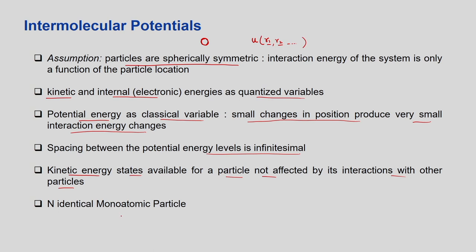We also assume that the kinetic energy states available for a particle are not affected by its interaction with other particles. Whatever energy states a particular atom has access to is not dependent on other atoms. That is why we consider N identical monoatomic particles — with polyatomic particles the calculations are much more complex because orientation coordinates must also be considered.